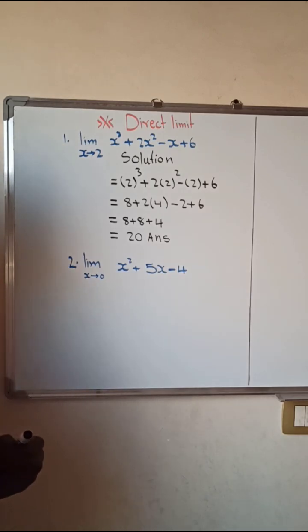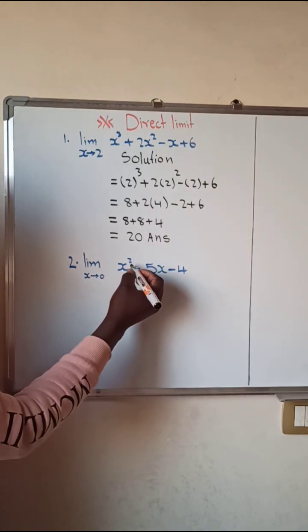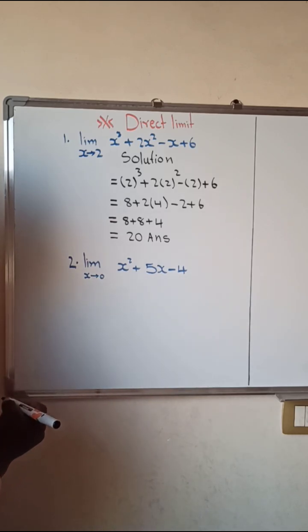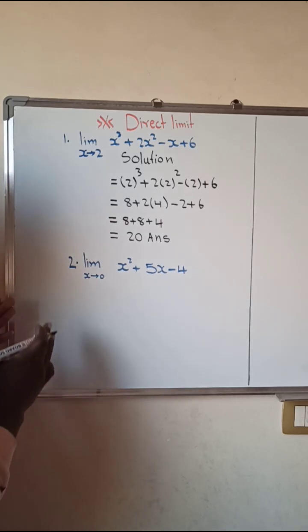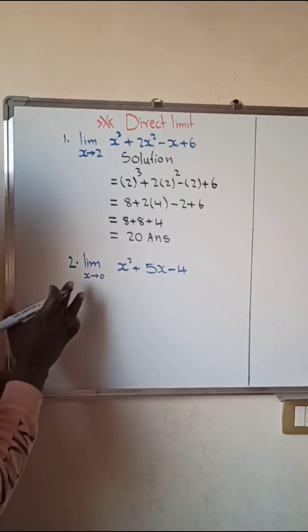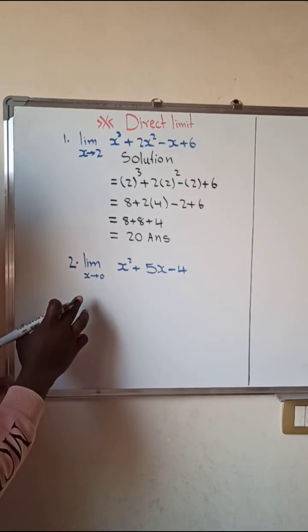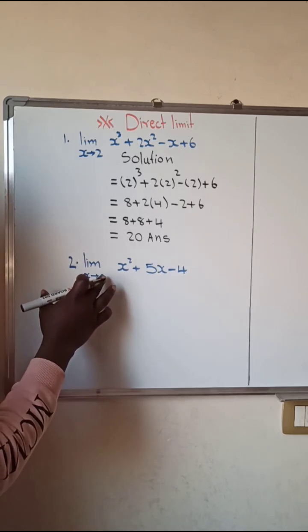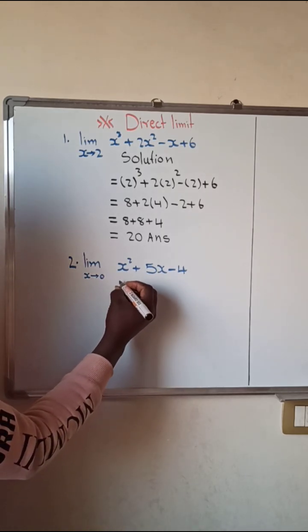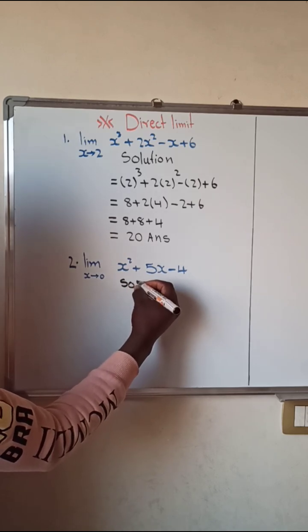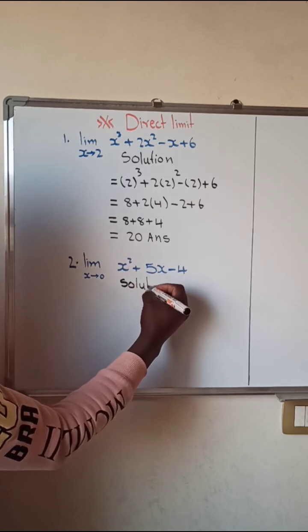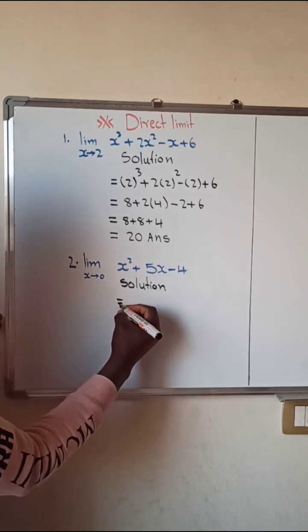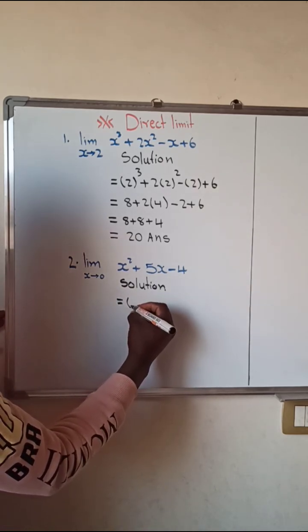Now let's move to Example 2. We have the limit of x² + 5x - 4 as x approaches 0. As we said, x approaches 0 means x equals 0 — that is the value of x. So for the solution, since the limit is direct, we substitute and have in bracket...